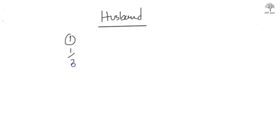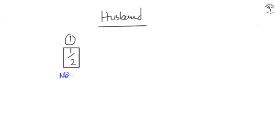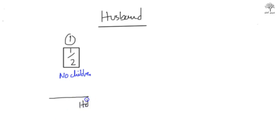There are two scenarios for the husband. Scenario number one: he gets half of the entire wealth. This is when there are no children involved. If the wife who passed away didn't have any children — irrespective of whether the children are from him or from another husband — so long as there are no children involved, he gets a half.